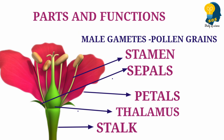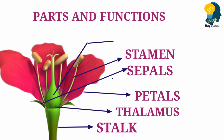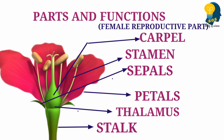Now let us move forward to understand the next and last part, that is the carpel. The carpel is the female reproductive organ present in the flower. It produces the female gametes, that means female sex cells. The female sex cell or the female gamete in the flower is called as ovum, also called as egg. If there is one gamete, we call it as ovum; if there are more, we call them as ova — that is the plural.